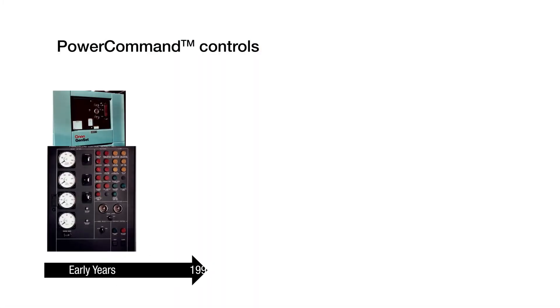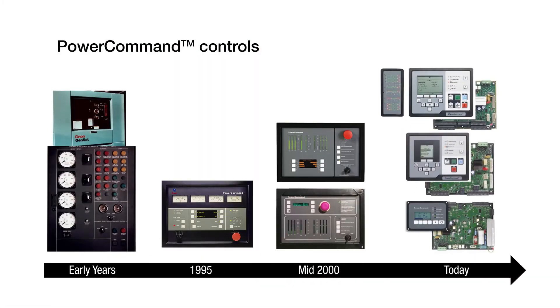A generator set equipped with a sophisticated intelligent control such as the power command will always protect itself and shuts down before causing any internal damage. The Cummins power command generator set paralleling controls have an established and proven record of reliability and dependability, with hundreds of thousands of units in service globally since their inception in the early 90s. In the next video, we will discuss the load-demand function.